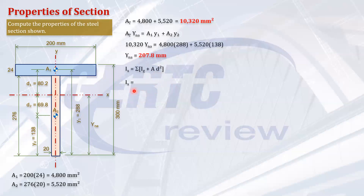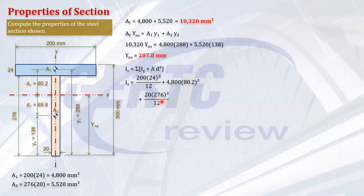Using the transfer formula, Ix equals the summation of (Ig + A·d²) for each area. For Area 1: (200 × 24³)/12 + 4,800 × 80.2². For Area 2: (20 × 276³)/12 + 5,520 × 69.8². Summing these gives the centroidal moment of inertia Ix about the x-axis.